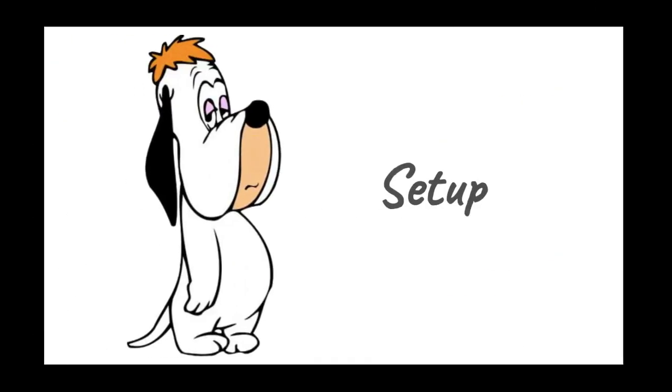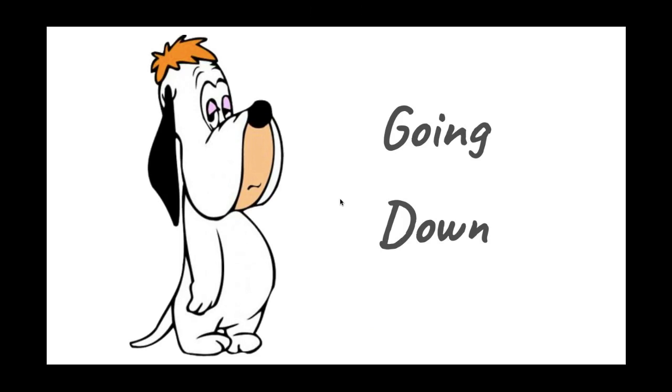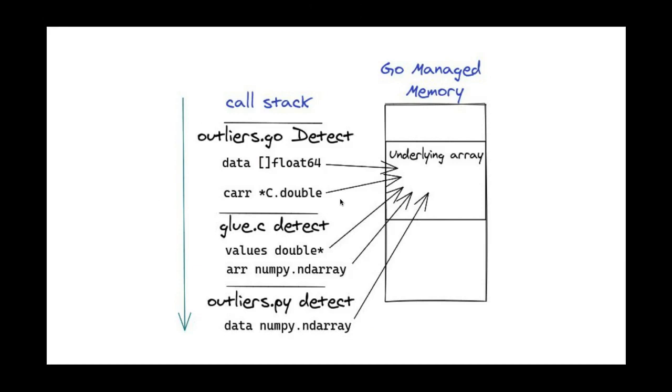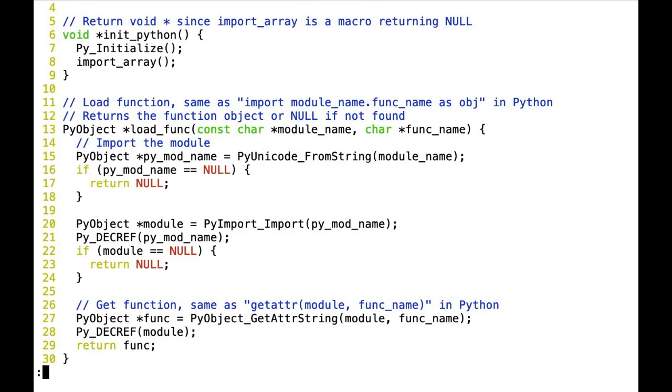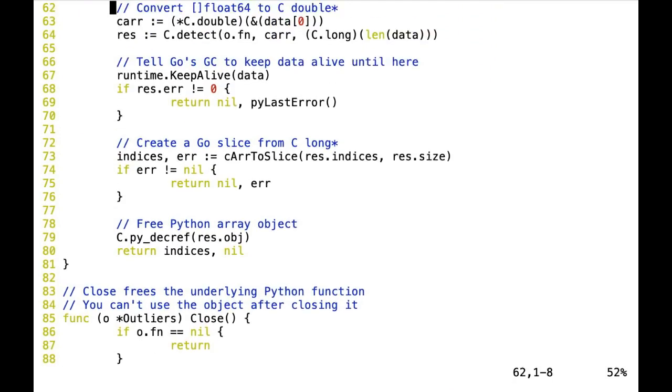Now we're all set. We initialized Python, initialized NumPy, we loaded the module, and we got the pointer to the function. Now, we're going to look at what happens when we call the detect function, all the way from Go down to the Python code. What we're going to do is make sure that everything is using the same memory. We're going to take the Go slice and pass it to C just as the address of the underlying array. Then in the C code, we're going to create a NumPy array that points to the same memory location where the underlying array of the slice is looking.